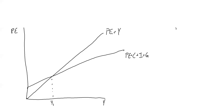Hey everyone. In the last video we set up the Keynesian Cross model. We're now going to distinguish between income and planned expenditure. Planned expenditure is going to be consumption plus investment plus government spending. Our equilibrium in this model is that expenditure is equal to income — PE equals Y.